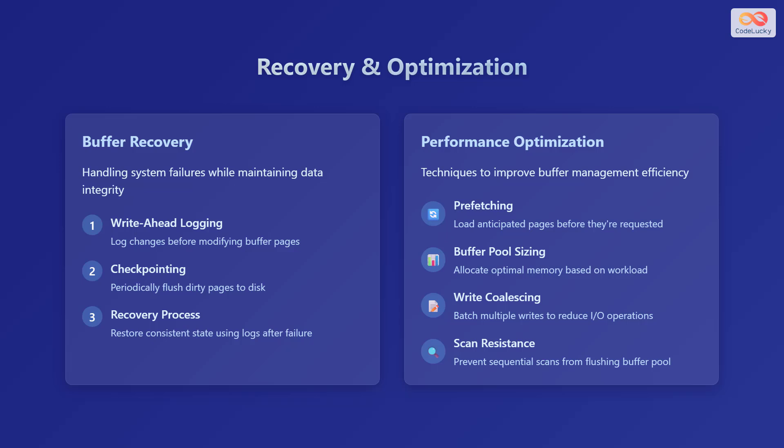Now, let's move on to performance optimization. Techniques to improve buffer management efficiency include prefetching, which means loading anticipated pages before they are requested. There is also buffer pool sizing, which is about allocating optimal memory based on workload. We also have write coalescing, where we batch multiple writes to reduce I/O operations. And lastly, there is scan resistance, to prevent sequential scans from flushing the buffer pool.